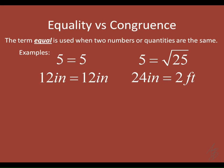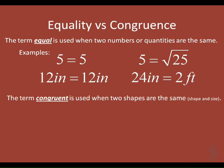You guys have been using equal signs for probably about 10 years now — you know what they mean. So the term congruent is used when two shapes are the same. We're going to be a little more specific about exactly what that means, but essentially when two shapes are the same — they have the same shape and the same size — then we call them congruent.